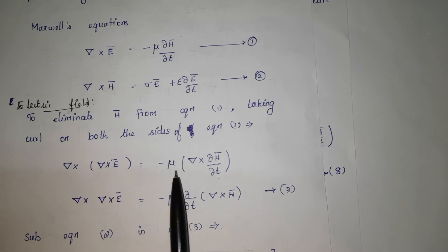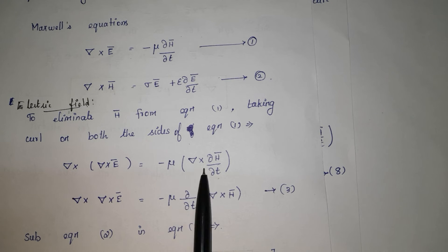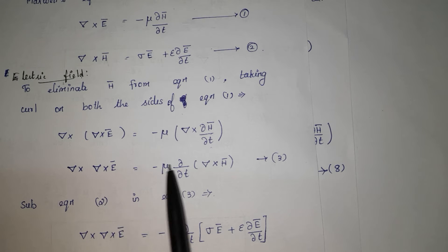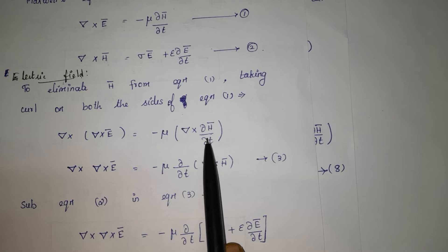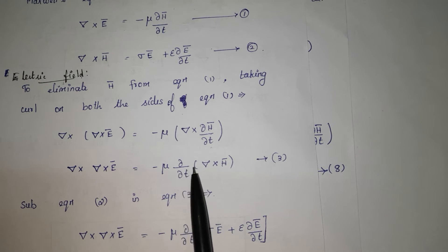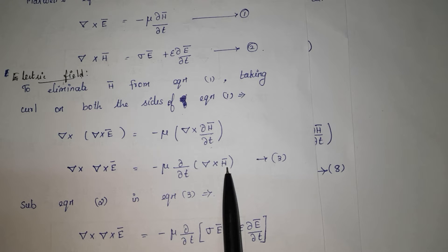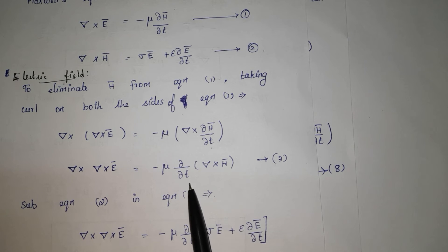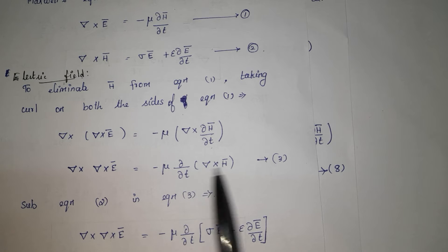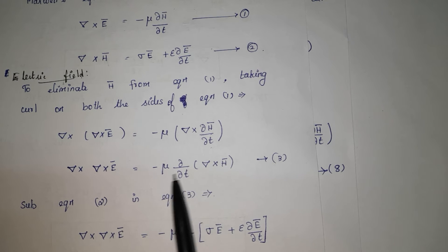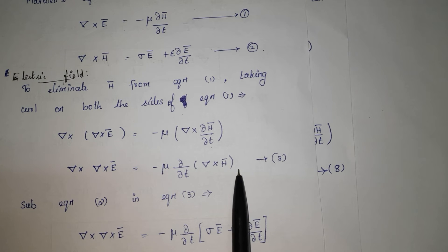Since del and partial/partial T operators are independent of each other, we can interchange the order of operators. So del cross, del cross E is equal to minus mu, and I am interchanging: partial by partial T into del cross H vector. Because del is differentiation with respect to space and partial/partial T is differentiation with respect to time, both are independent. This is equation number 3.